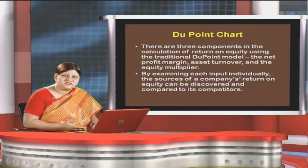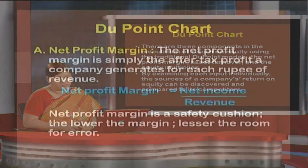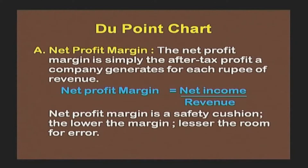Why are they being used, what is their significance, and how are they being used? First, net profit margin — one of the components of the DuPont chart to ascertain return on equity. Net profit margin is simply the after-tax profit of a company generated for each rupee of revenue. We can compute it as: net profit margin = net income divided by revenue, where net income is after-tax profit and revenue is turnover.